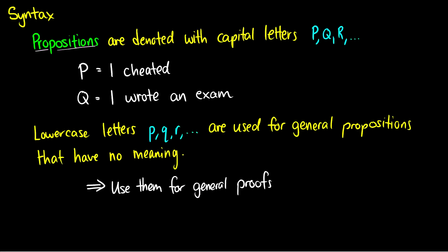Lowercase letters p, q, r are just general propositions that don't have any specific meaning. And we'll be using these for proofs. So capital letters will have English translations, while lowercase letters will not.